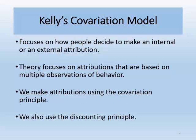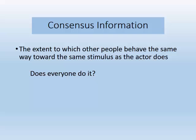In addition, we use the discounting principle, which is the notion that whenever there are several possible causal explanations for a particular event, we are less likely to attribute the cause of behavior to one particular cause. According to the covariation model, people rely on three types of information when trying to make accurate attributions. One of these is consensus information — the extent to which other people behave the same way toward the same stimulus as the actor does. In other words, does everyone do it?